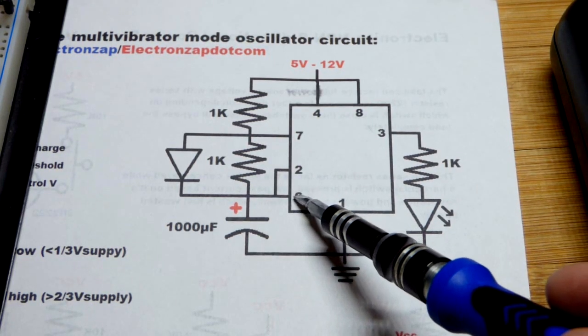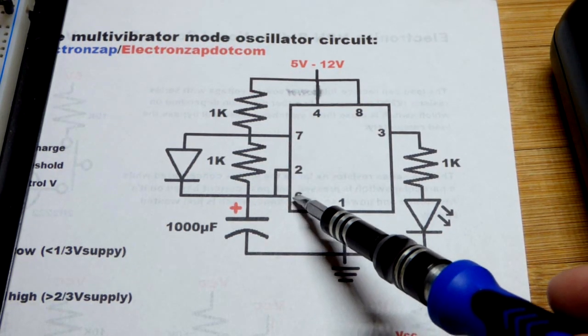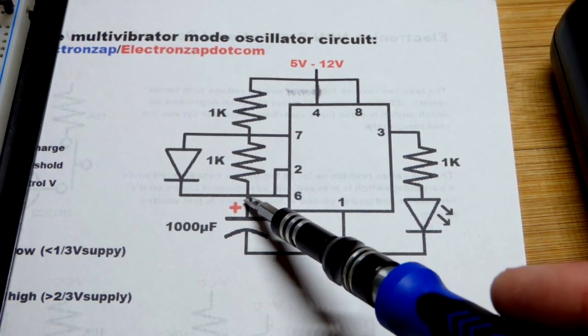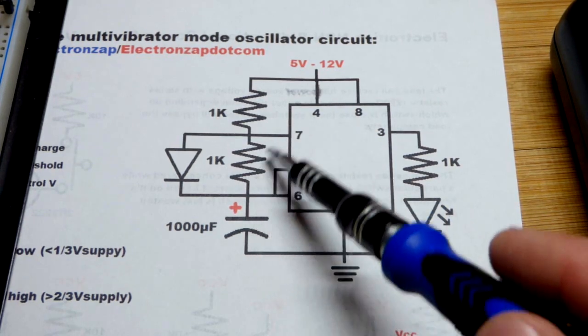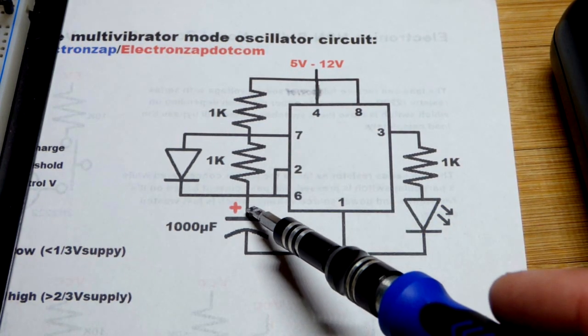When the capacitor gets to two-thirds supply voltage, that pin six senses it and discharges through the resistor. This is a discharge pin, so that connects to ground. We'll look at that later on.